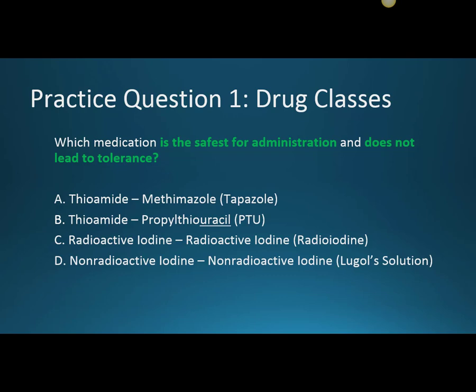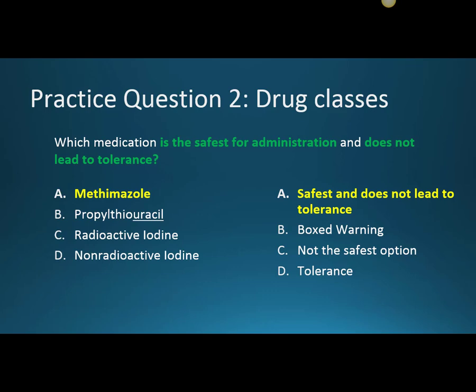Our first question is: which medication is the safest for administration and does not lead to tolerance? Is that A, thioamide methimazole (brand Tapazole); B, thioamide propylthiouracil (PTU); C, radioactive iodine (radioiodine); or D, non-radioactive iodine (Lugol's solution)? The answer is A, methimazole — it is the safest option and does not lead to tolerance.